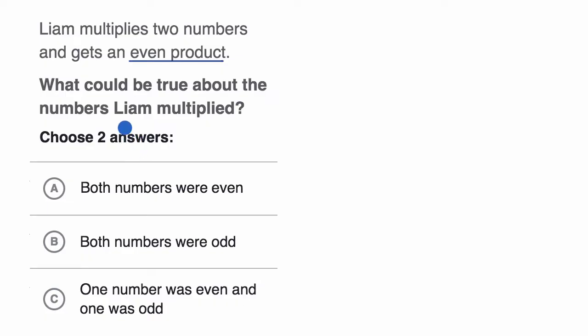All right, now let's do this together. And we have to think about what could be true. They don't have to be true, they just have to be possible. Okay, now is it possible that both numbers were even? Can you multiply two even numbers and get an even product?